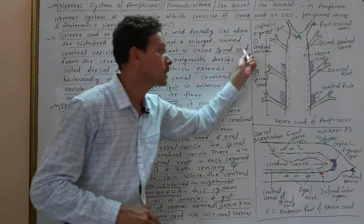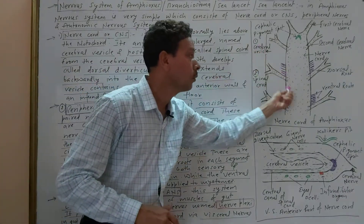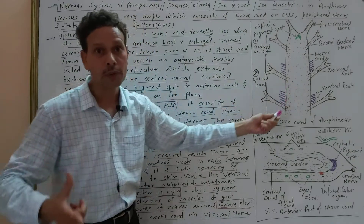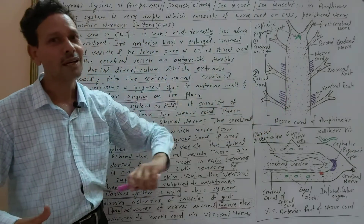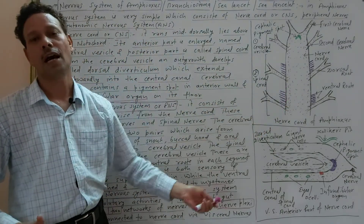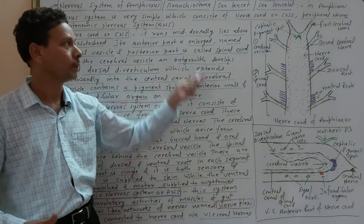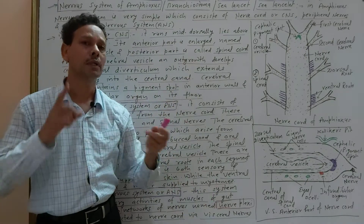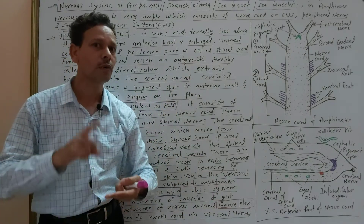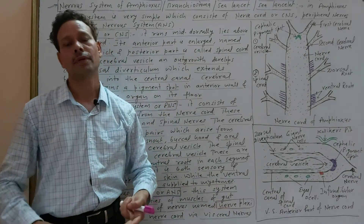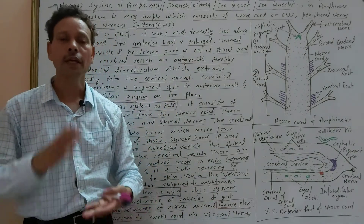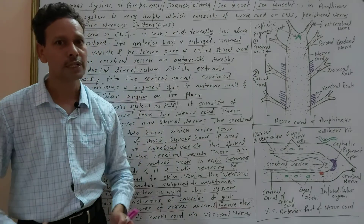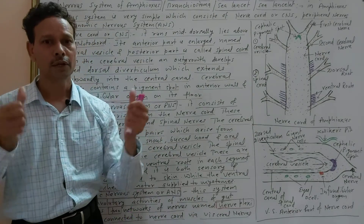These nerve plexuses are connected to the nerve cord via visceral nerves. This is all about the nervous system of Amphioxus. The topic is over, and the next lecture will follow. Thank you.